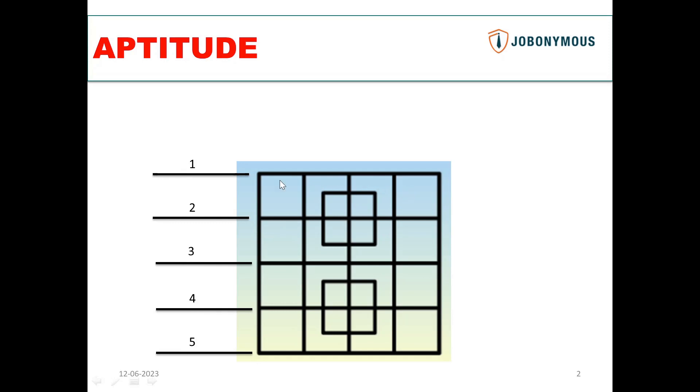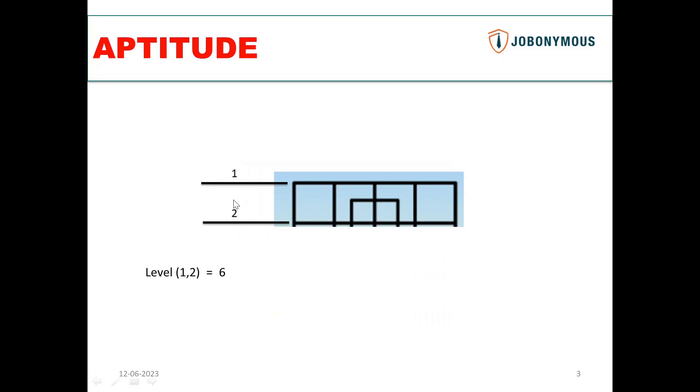Otherwise you'll get confused, so you hide the remaining figure and count the number of squares between one and two. So I've done this for you. The number of squares are one, two, three, four, five, and six. So number of squares are six between one and two.